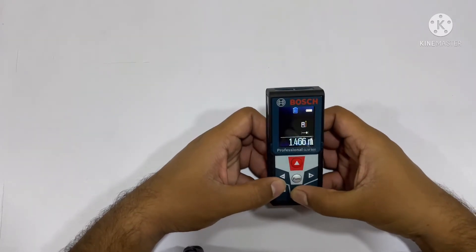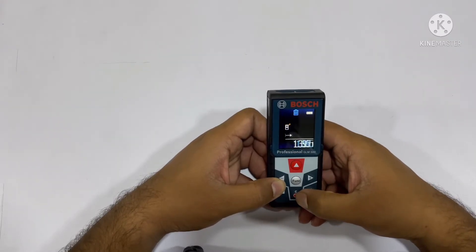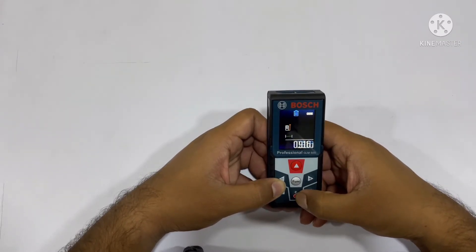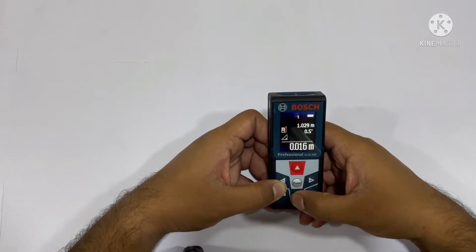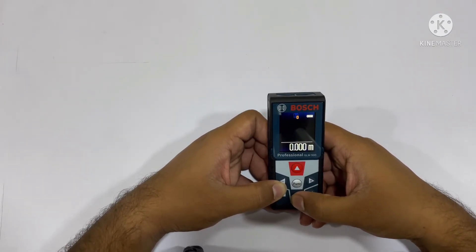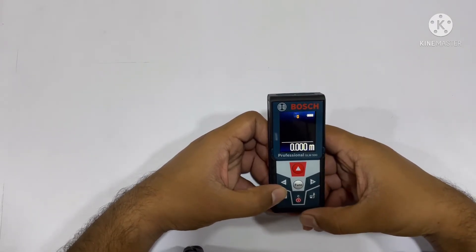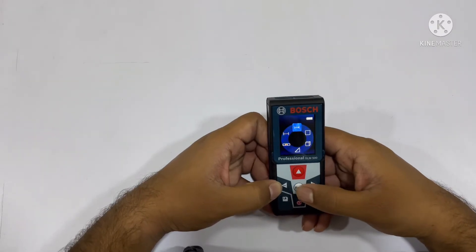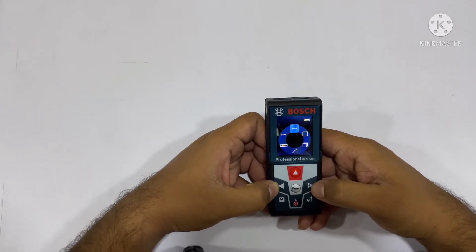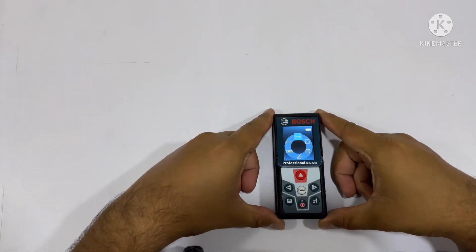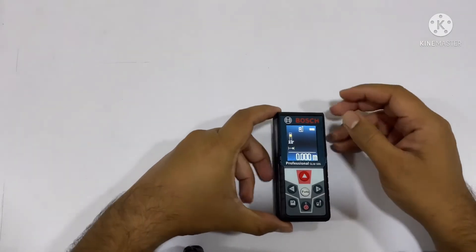And here we can delete it if you want. Just hit the clear button, all the data will be deleted. So now we don't have any recorded value in this device. There is another function that I want to tell you over here. This device right now is taking the distance as you can see over here.